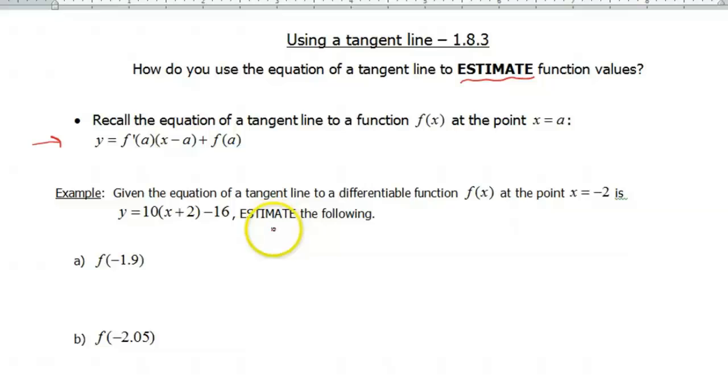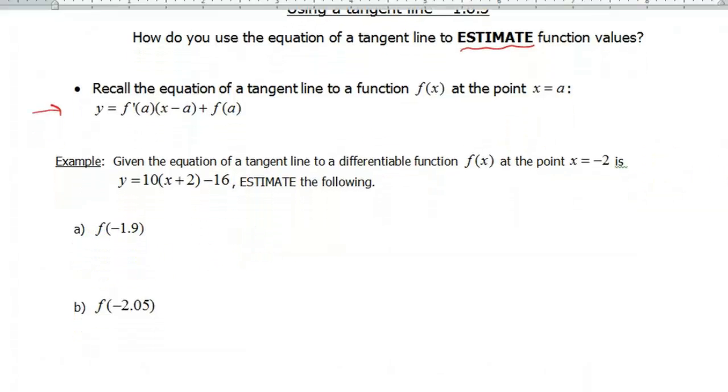And we want to estimate f(-1.9) and f(-2.05). Now you'll notice that these two values that we're estimating are pretty close to the value for a, which is -2. The further away you get, the worse your estimation's gonna be. But because I stayed pretty close to that value, our estimation's gonna be pretty good.